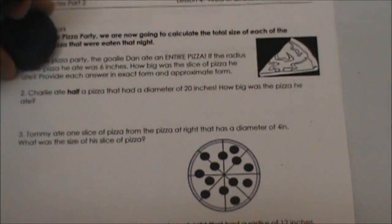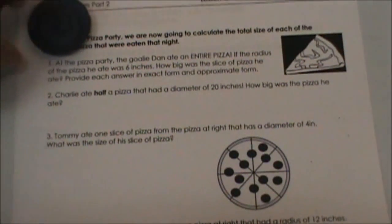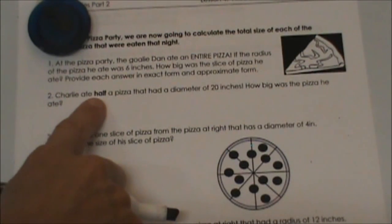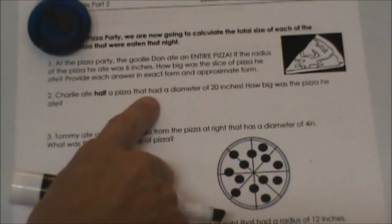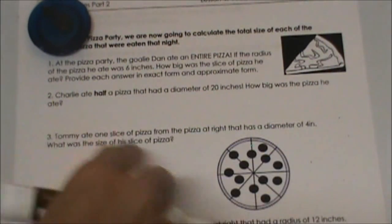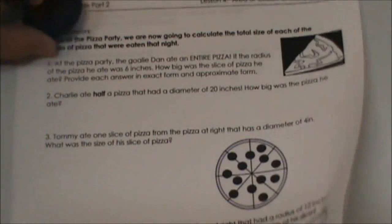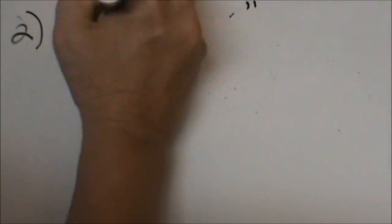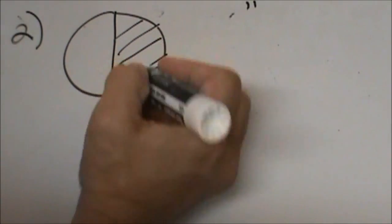Charlie ate half a pizza that had a diameter of 20 inches. How big was the pizza he ate? Okay, so he only ate half. So let's think about it this way. We're going to take a pizza and he's eating half of it and the diameter is 20 inches.